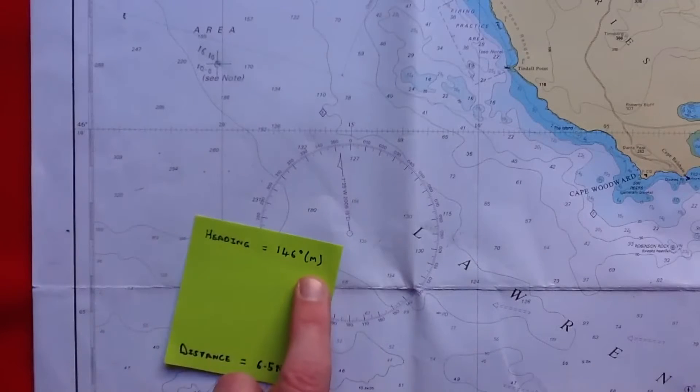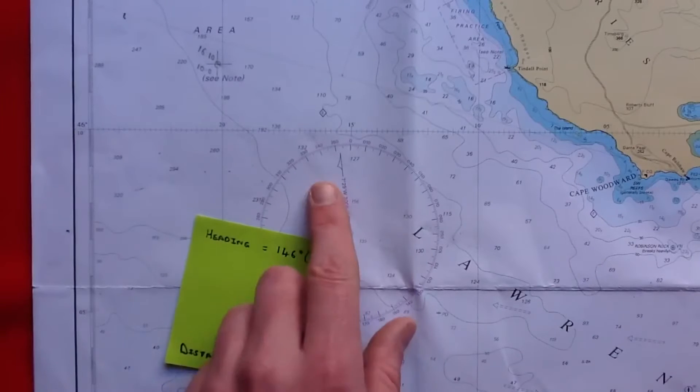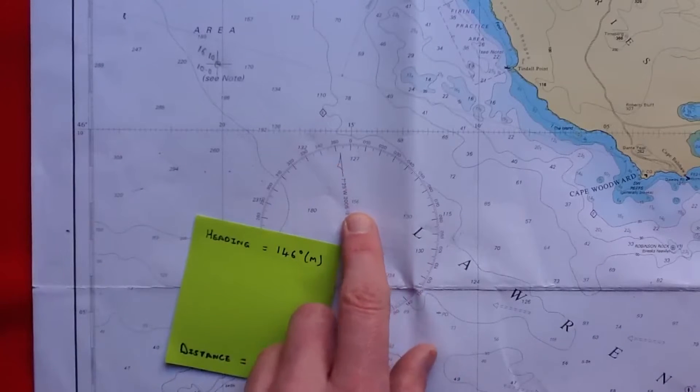First of all we look at the heading. Now this heading is in magnetic. If we were to make an adjustment for deviation, we'd do it first. In this case we're going to skip straight on to adjust for variation. We can see from our compass rose that variation is 7 degrees west.